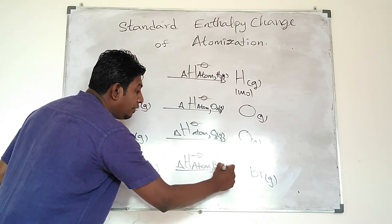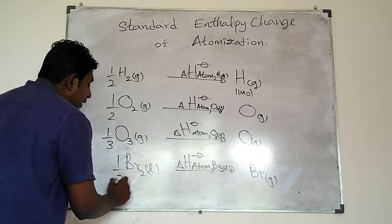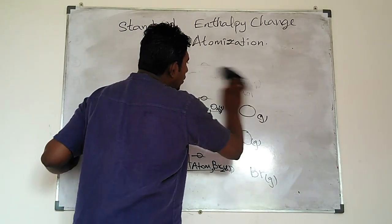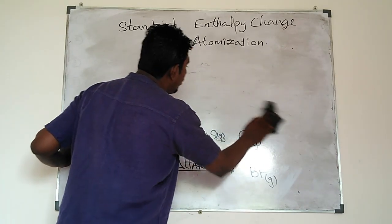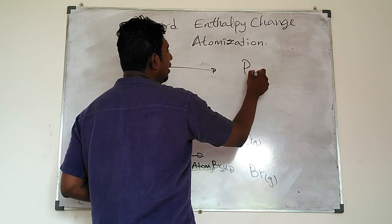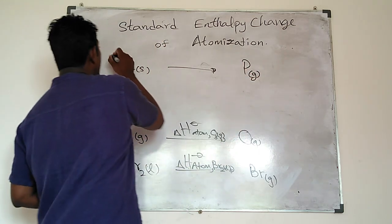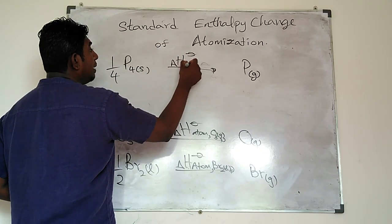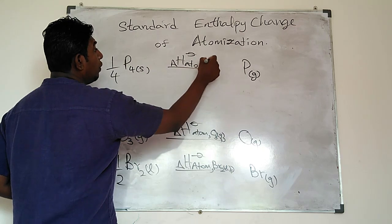You need to clearly state for what species it stands — for example, Br2 liquid. Then the coefficient is one half accordingly. For a solid example, let's use P4 solid. The standard enthalpy change of atomization of P4 solid gives phosphorus gaseous atoms — one mole. So one mole of P gaseous atoms is produced from P4 solid.